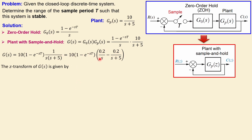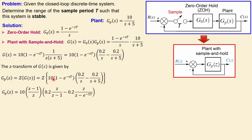The z-transform of this complete transfer function is determined using the z-transform table. The term 10 stays as a constant. The factor (1 - e^(-sT)) becomes (z-1)/z. The term 0.2/s converts to 0.2 · z/(z-1), and 1/(s+5) converts to z/(z - e^(-5T)). In total you get this combined expression with the plant now in the z-domain.